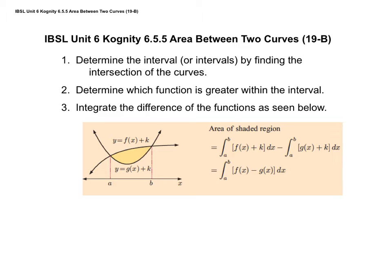I'm going to use this to also explain why area underneath the x-axis is just negative. If it says to find the area between the two curves and it does not give you an interval, then they intend for you to find the intersection points — just like when finding area above the x-axis we had to find the x-intercepts. Here, if we are looking for the area between two curves, we need to find the intersection of those two curves.